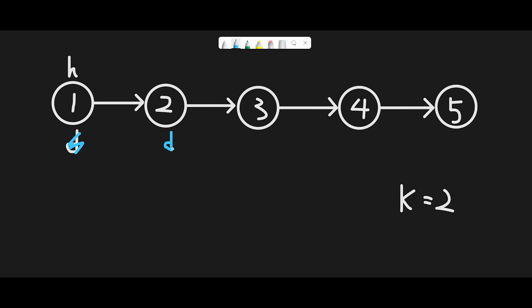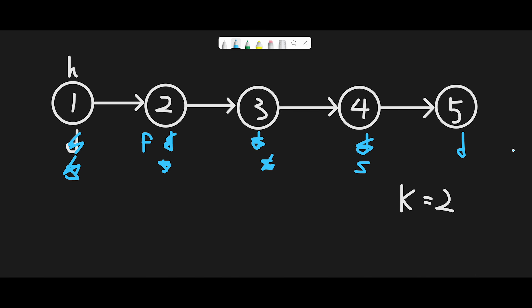We copy the dummy pointer to a variable called 'first pointer' to keep track of that target node. Then we create another pointer called 'second pointer', initialized with head. Next, we move both the dummy pointer and the second pointer simultaneously until dummy dot next is null. So dummy moves next, second moves next — repeat until dummy dot next is null.